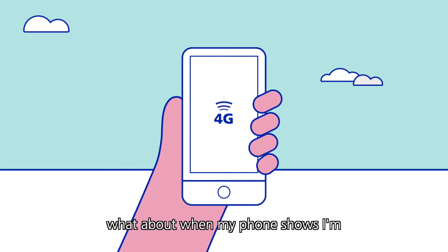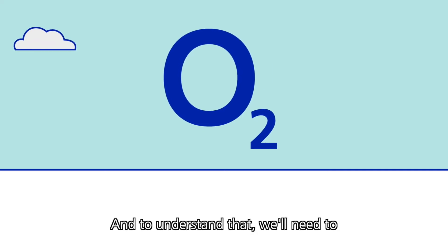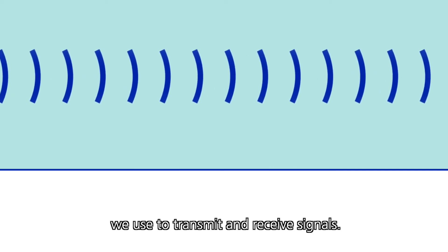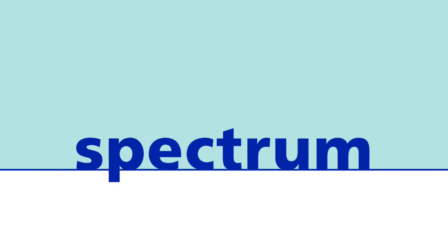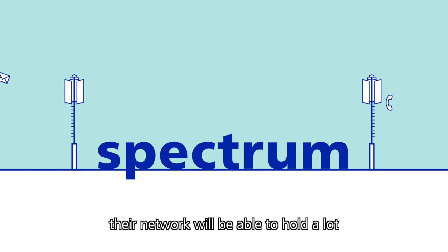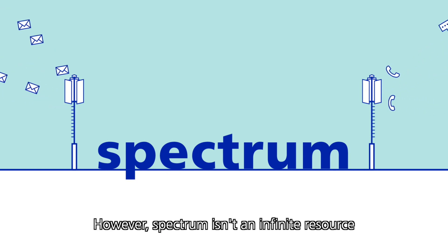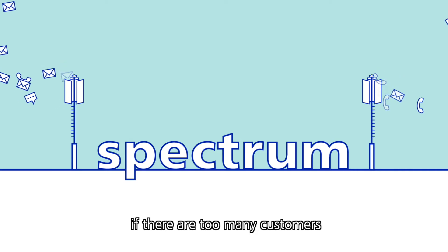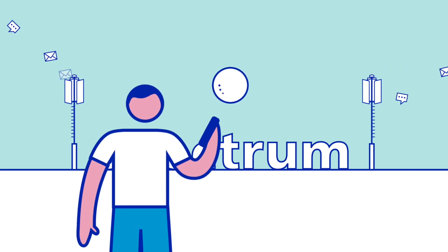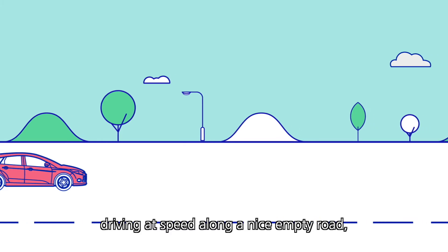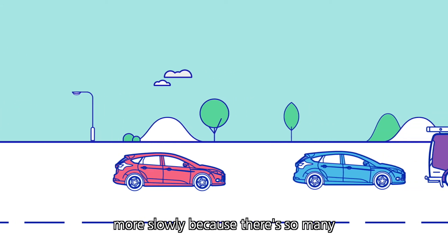So that explains phone calls. What about when my phone shows I'm connected to 4G, but my apps work slowly? You're talking about network capacity. To understand that, we'll need to learn a bit more about the electromagnetic waves we use to transmit and receive signals. The technical name for these waves is Spectrum, and it's auctioned off by Ofcom to each of the operators. So if an operator has lots of Spectrum, their network will be able to hold a lot of digital traffic for customers to make calls, send texts and use their apps quickly. However, Spectrum isn't an infinite resource, and it'll eventually be used up if there are too many customers using our network in one area. When that happens, your apps will run more slowly.